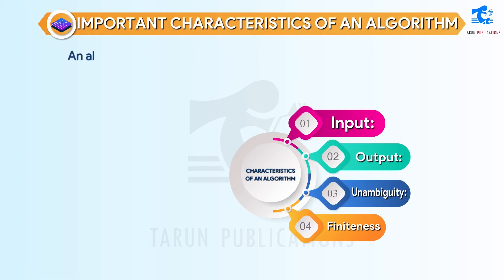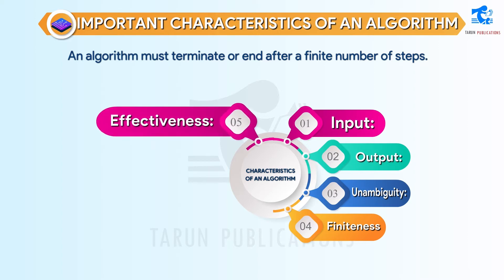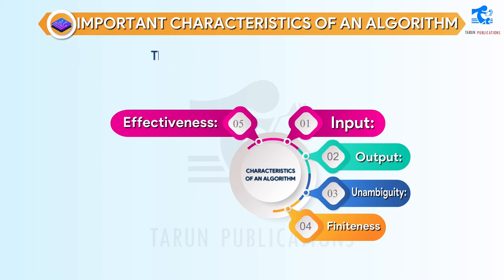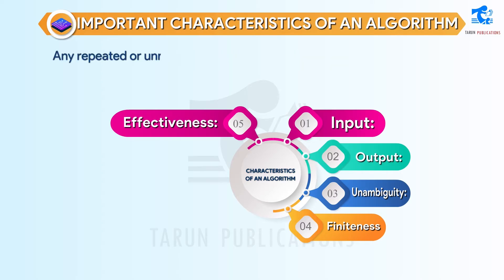Finiteness: an algorithm must terminate or end after a finite number of steps. Effectiveness: the steps specified in the algorithm must be appropriate and feasible. Any repeated or unnecessary steps might lead to an ineffective algorithm.